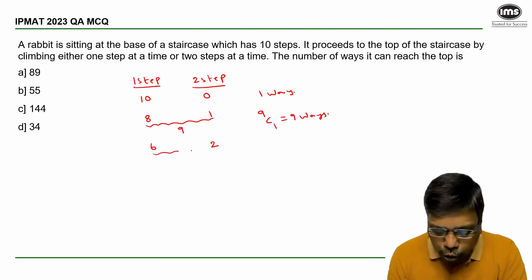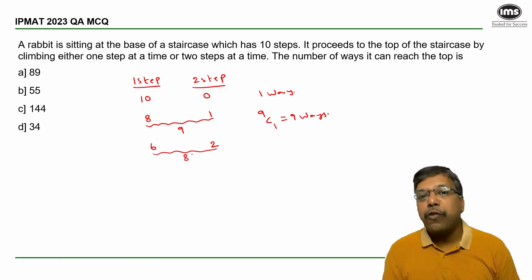So a total of eight jumps are made, out of which two jumps are double step and six jumps are single step. Which two?